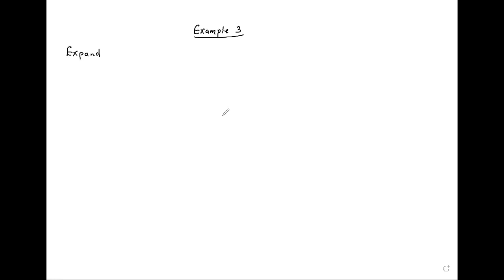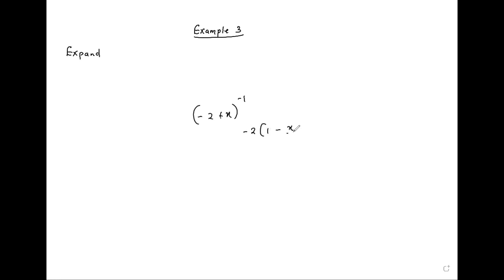So if you have negative two plus x to the power negative one and they ask for the validity, you cannot say the modulus of x is less than negative two — that's not true. The modulus is never less than a negative number. So what we do is, in its initial state, we make sure the first position is one, so this expression can be in that form. When the part is still outside, we are still in its initial state, and then we are able to find the value of the expansion — the negative two will go out as a constant.